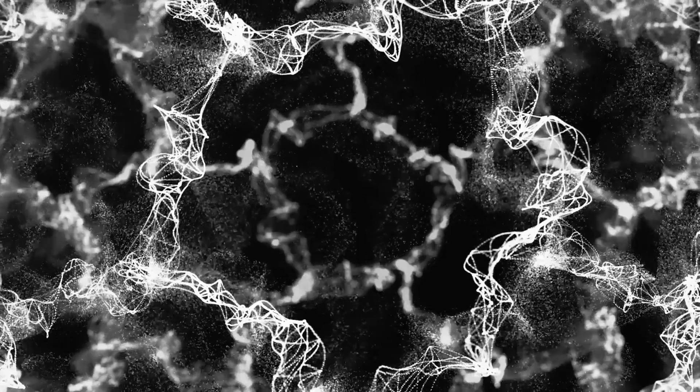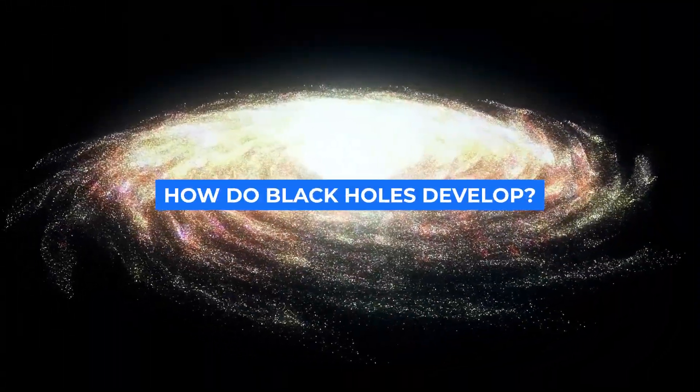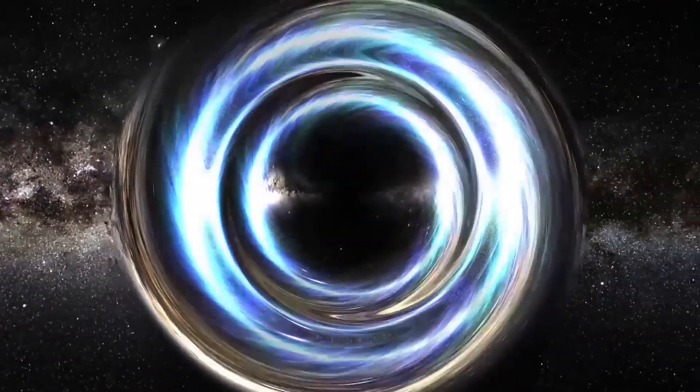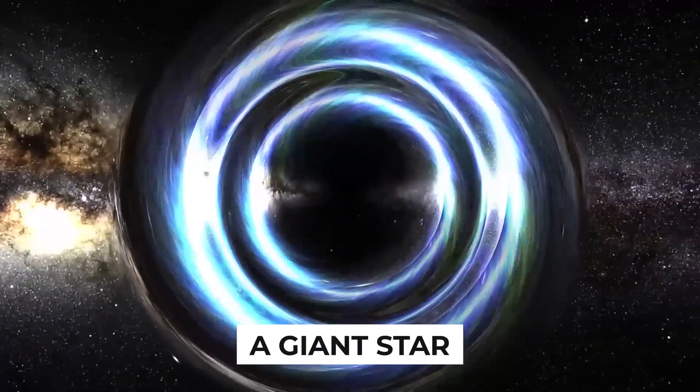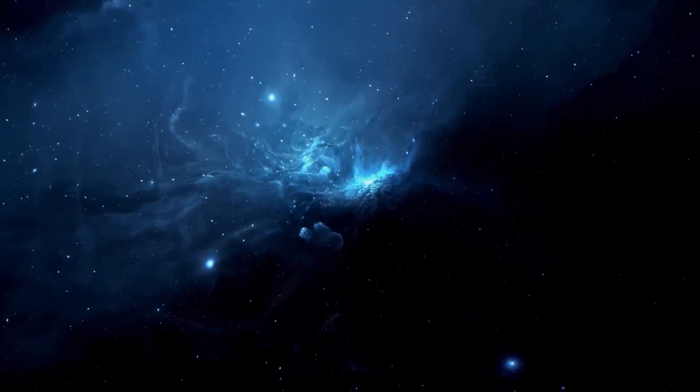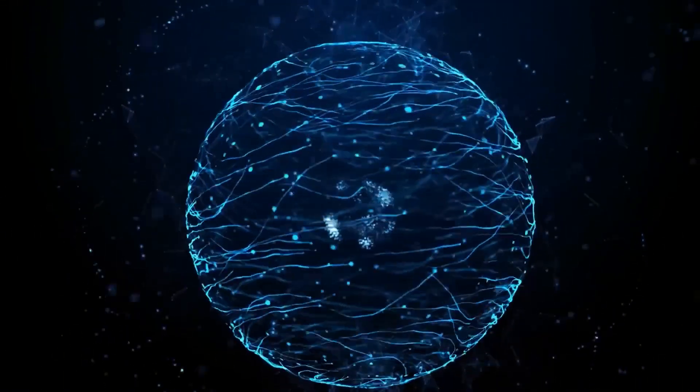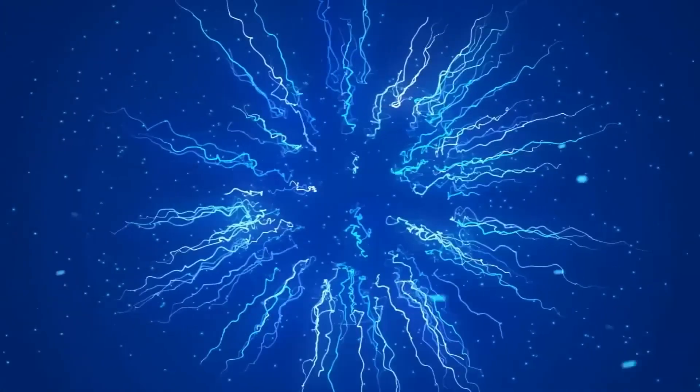Although researchers have discovered one possible route to black hole formation, there could be others. A black hole can be created in the event of the final collapse of a giant star. When a large star exhausts its fuel, it collapses, a phenomenon initially predicted by Professor Chandrasekhar.